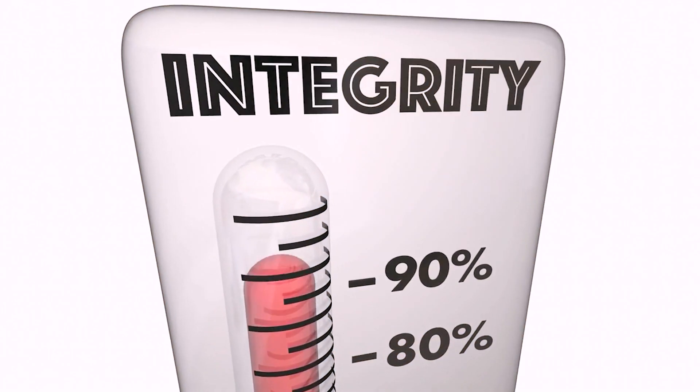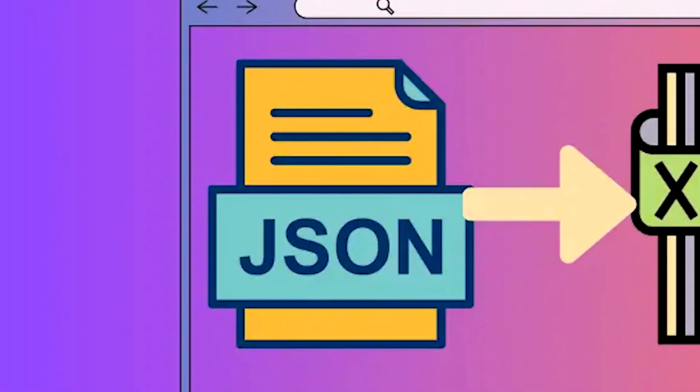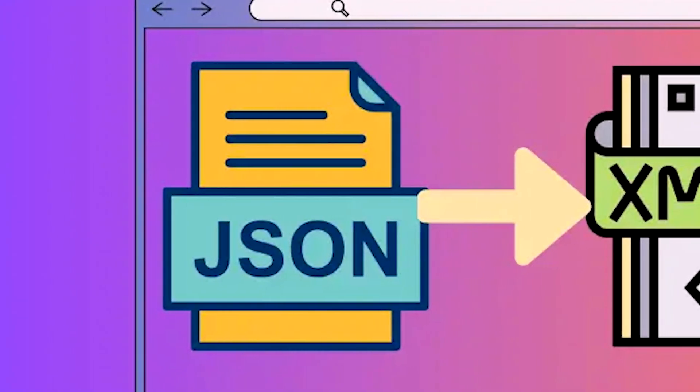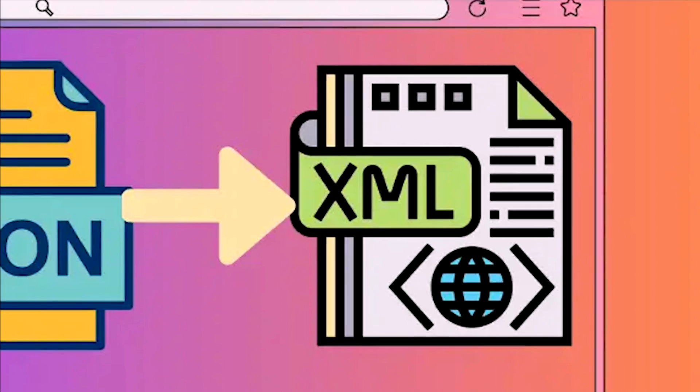Fast forward a decade, and we have JWTs. Like SAML, JWTs sign data to ensure its integrity, but they came with the promise of simplicity. JSON, which is the foundation of JWTs, is easier to work with than XML. It's compact and requires no complex canonicalizations.